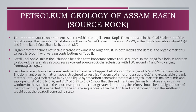The important source rock sequences occur within the argillaceous Coppili formation and in the coal-shale unit of the Barail group. Organic matter richness of shales increases towards the Naga thrust. The Barail coal-shale unit in the Shapan belt also forms an important source rock sequence. In the Naga fold belt, the Disang shales also possess excellent source rock characteristics with TOC around 4%. Geochemical analysis of exposed sediments from the Shapan belt shows the dominant organic matter type is structured terrestrial. Presence of amorphous and extractable organic matter indicates a fairly good liquid hydrocarbon generating potential. In the sub-thrust, the source sequences occur at greater depths and should be in a higher state of thermal maturity, expected to be at peak oil generating state.